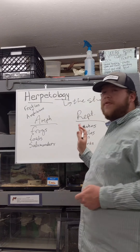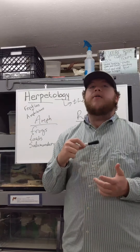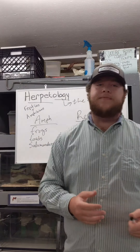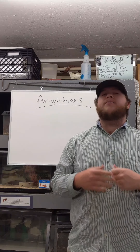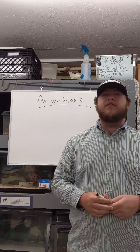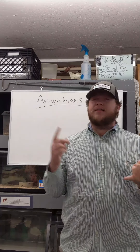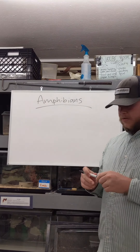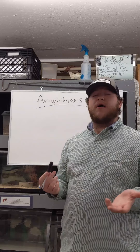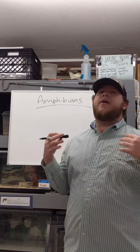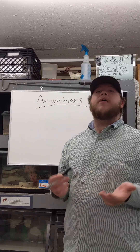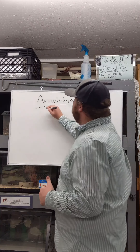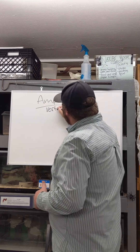Now that we have these animals in mind, let's start breaking down what each group contains. When we talk about amphibians, one of the first things to establish is whether they have bones and, if so, whether they have a backbone. If you think about how a frog moves, it would have to have a backbone in order to jump and move around. When an animal has a backbone, it's called a vertebrate. So now we know that amphibians are all vertebrates.